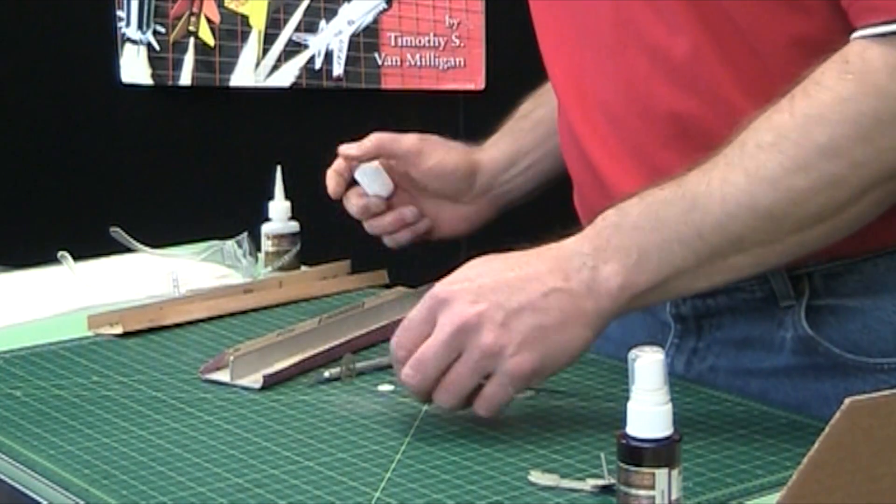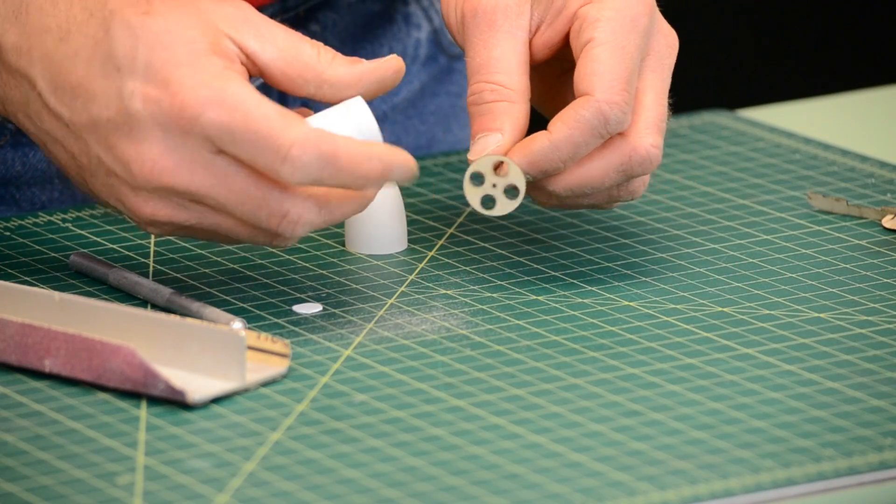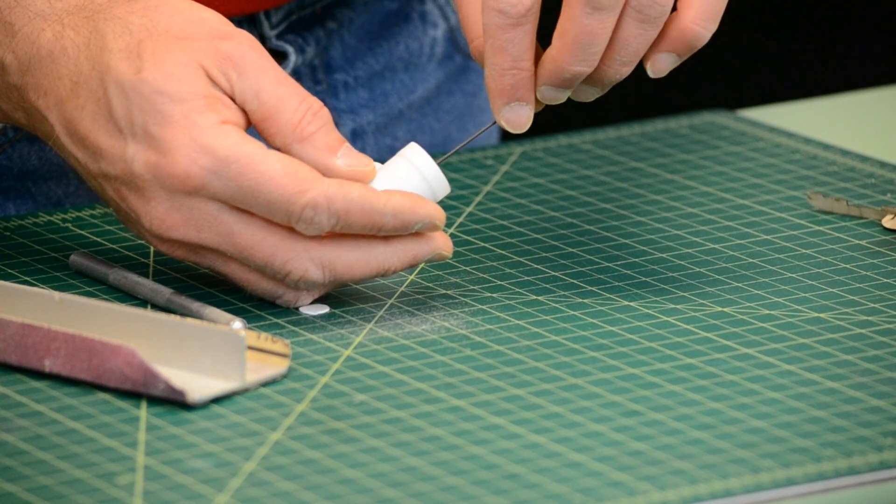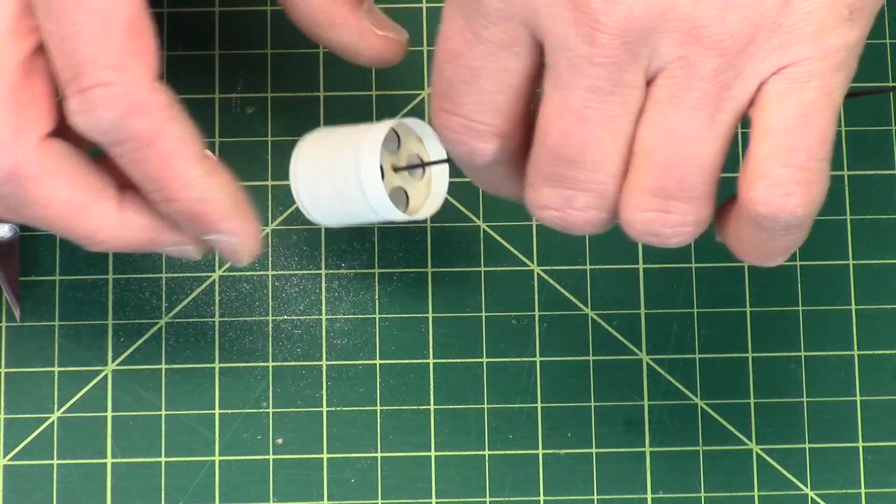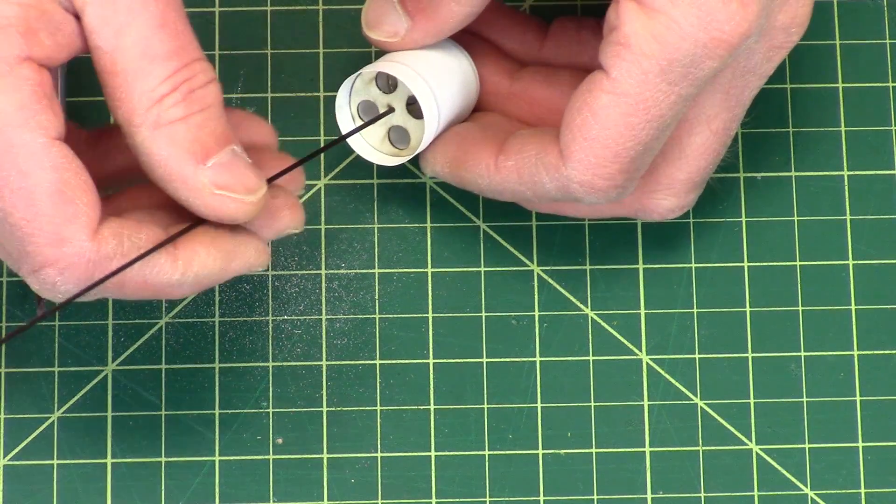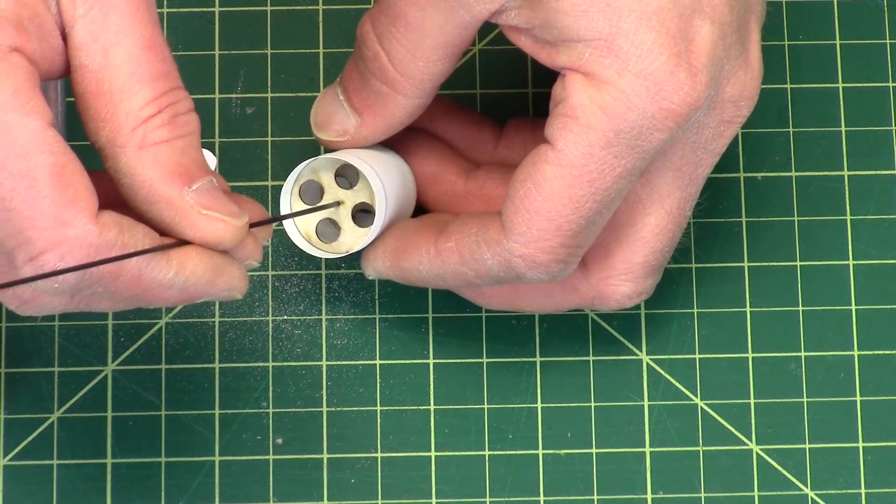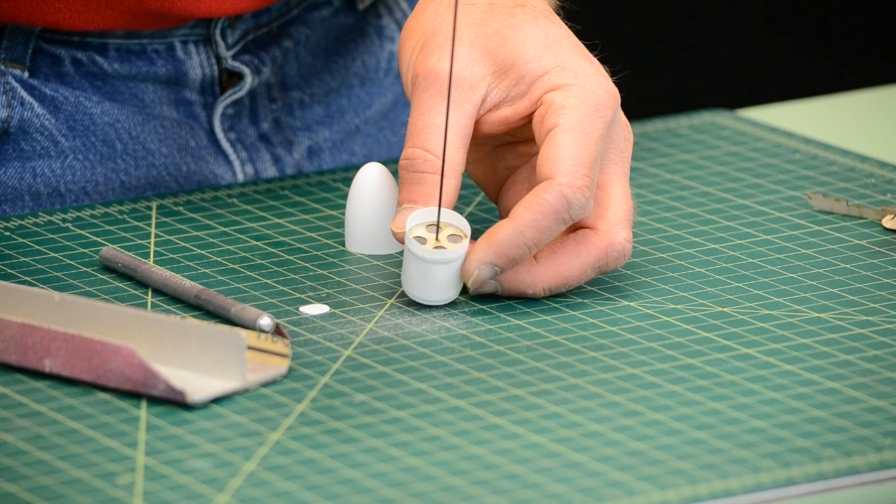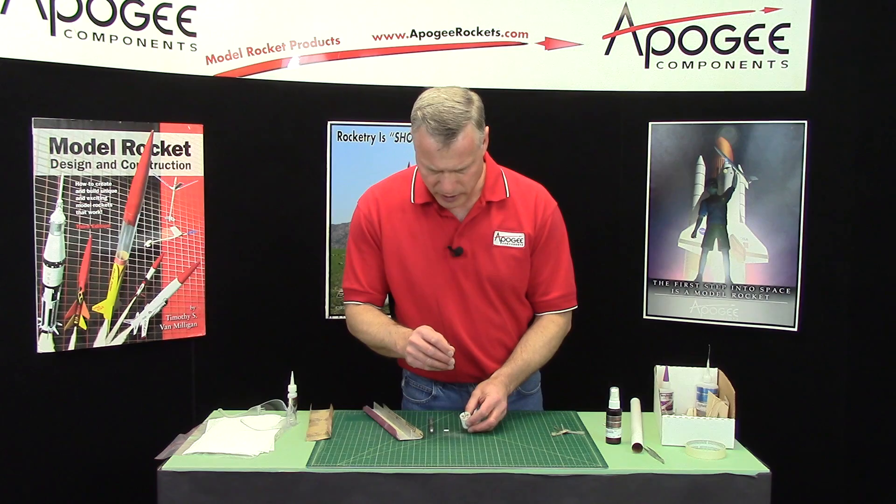I'm just going to put the disc on the rod and this one can fit right into the shoulder. You can see that. And I'm going to glue that in place.